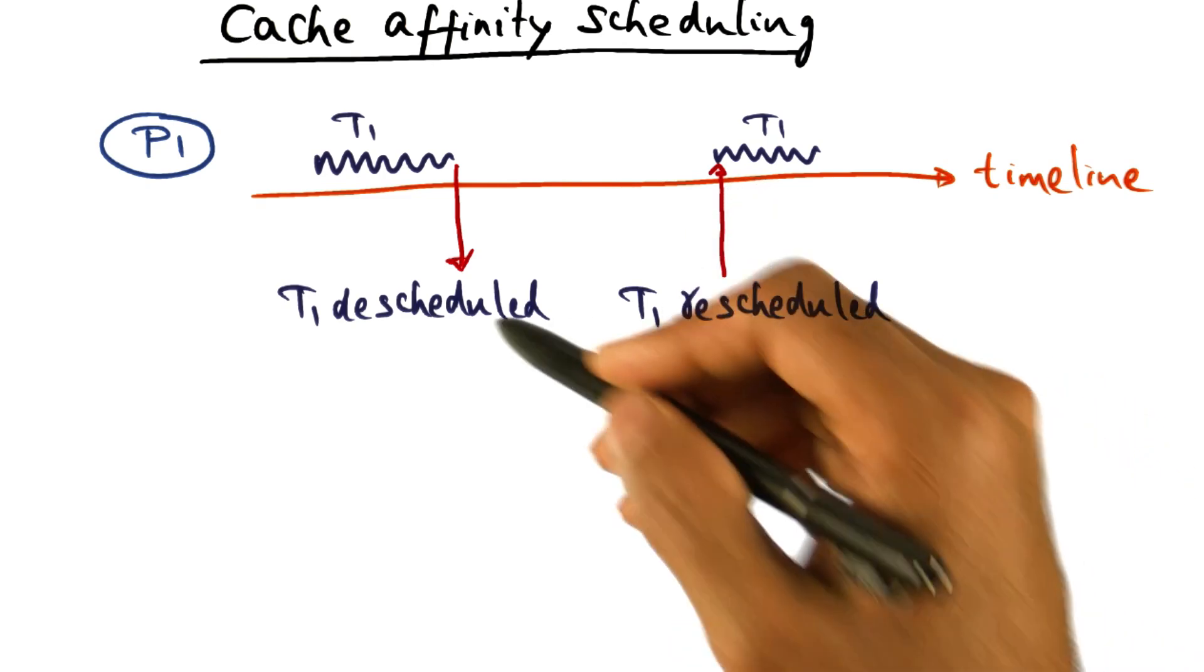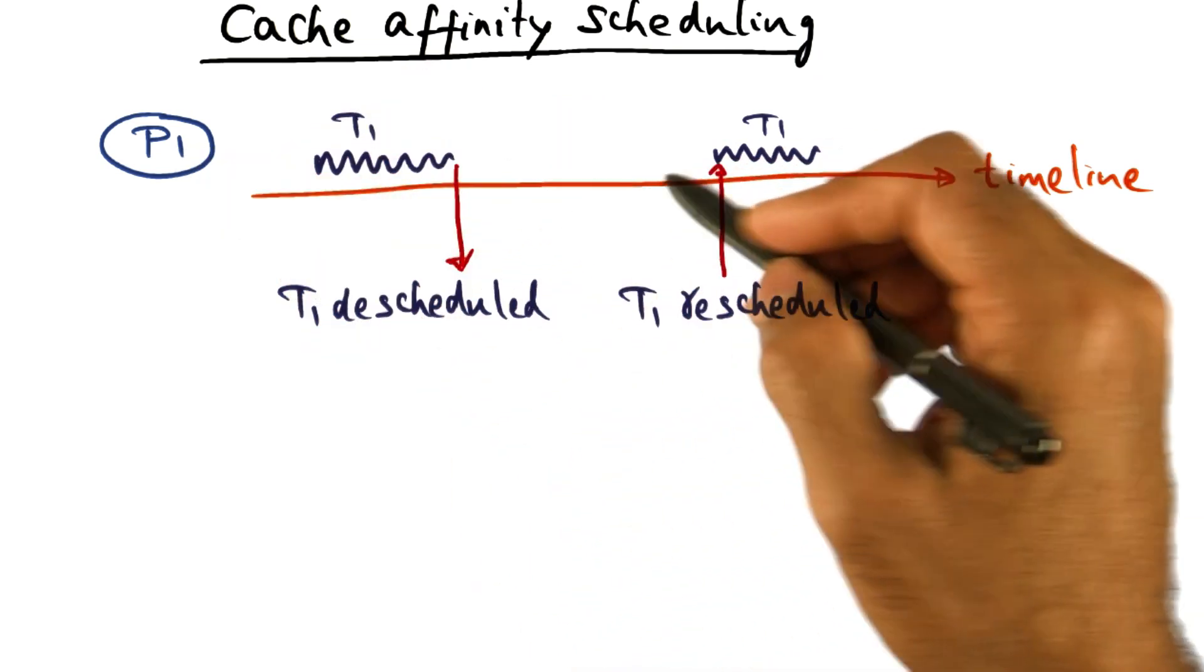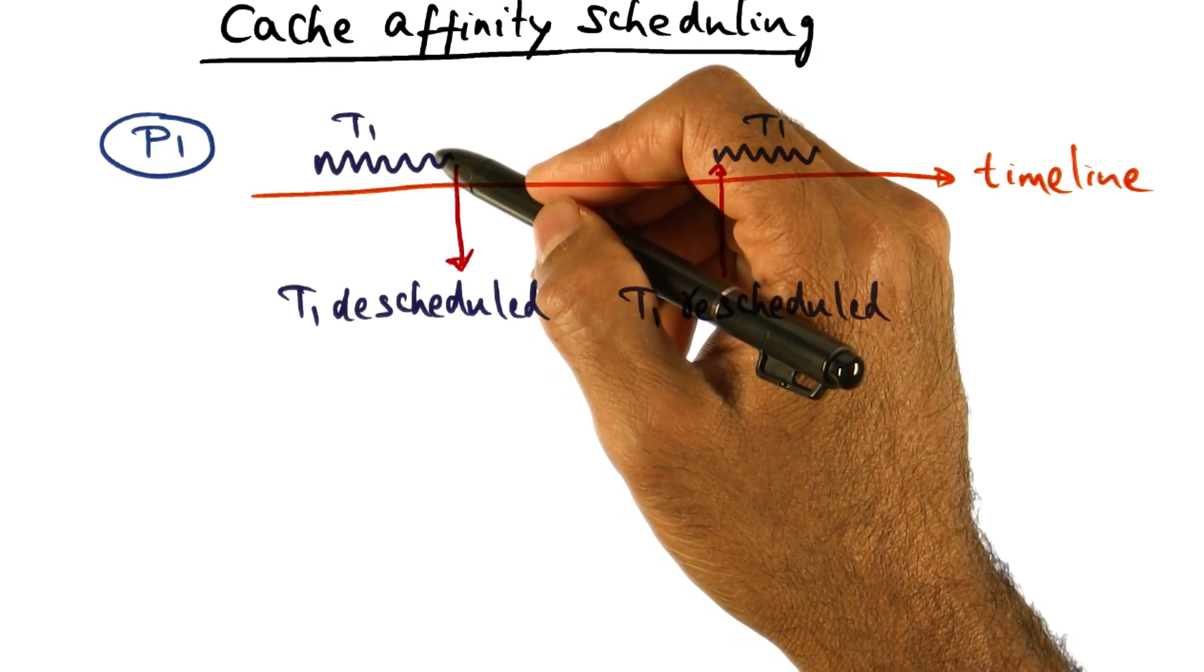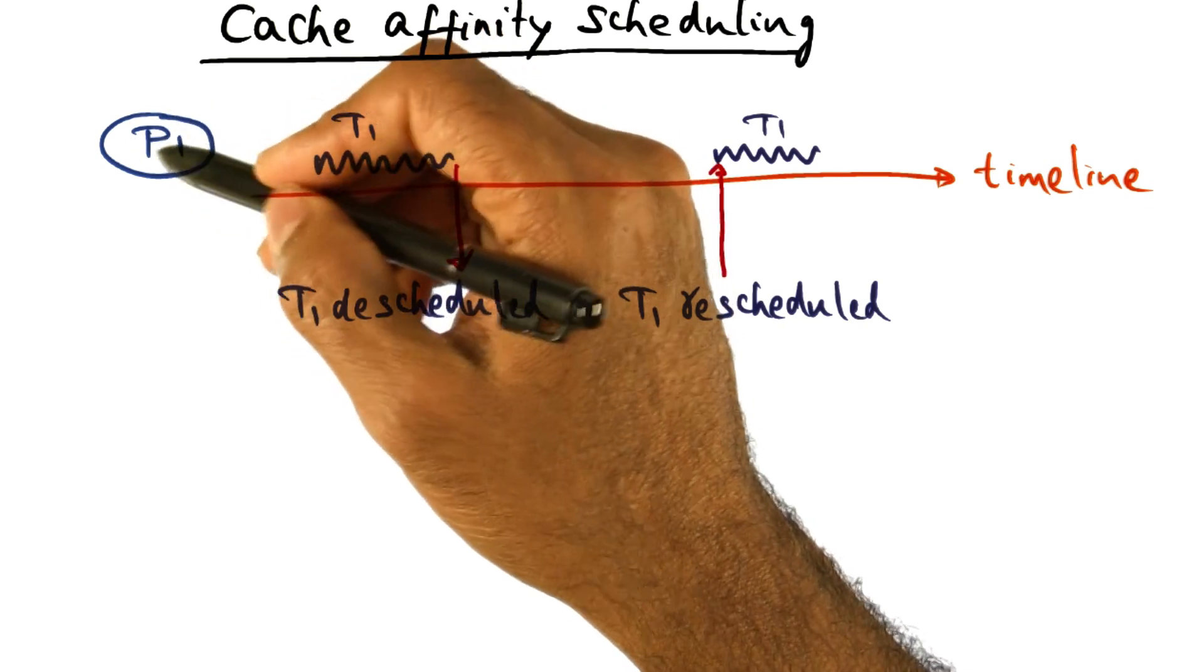Why? Because it used to run on this processor P1, and therefore the memory contents of T1 that it needed for its execution were in the cache of P1.